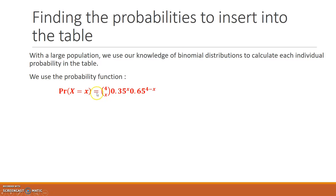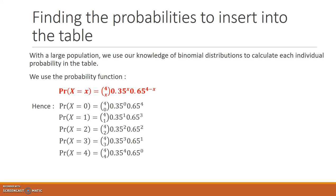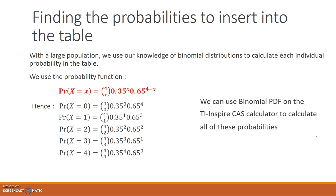The probability that X takes any given value is equal to 4CX times (0.35)^X times (0.65)^(4−X). So: P(X=0) = 4C0 × (0.35)^0 × (0.65)^4; P(X=1) = 4C1 × (0.35)^1 × (0.65)^3; and similarly for X=2, X=3, and X=4. All these probabilities can be calculated using Binomial PDF on the TI-Nspire CAS calculator — we don't need to calculate them by hand.